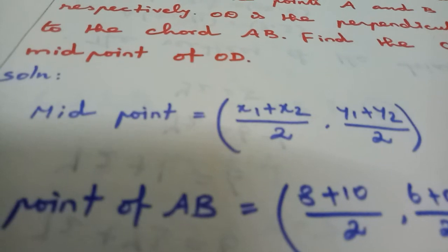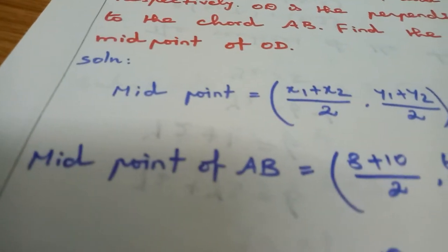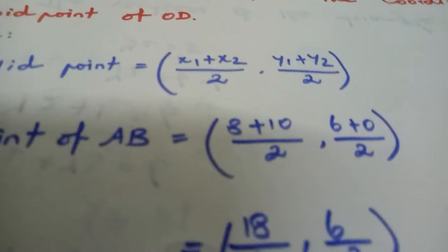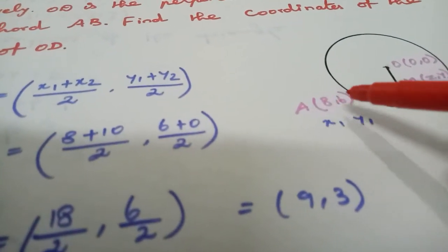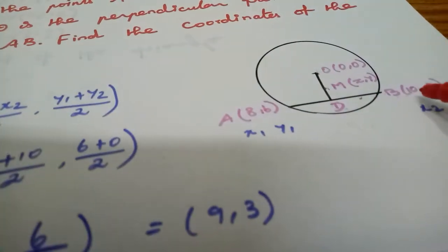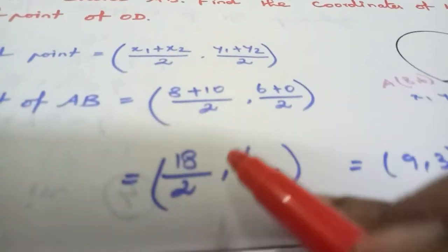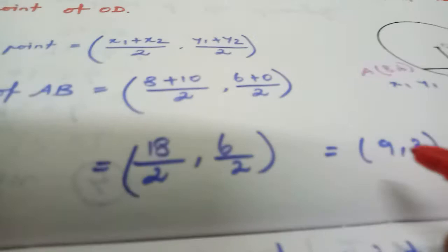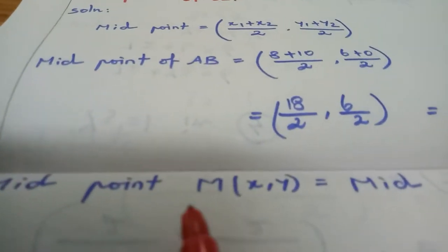Midpoint formula is (x₁+x₂)/2, (y₁+y₂)/2. Midpoint of AB equals: using A(8,6) and B(10,0), we get (8+10)/2, (6+0)/2, which is 18/2, 6/2, equals (9,3).